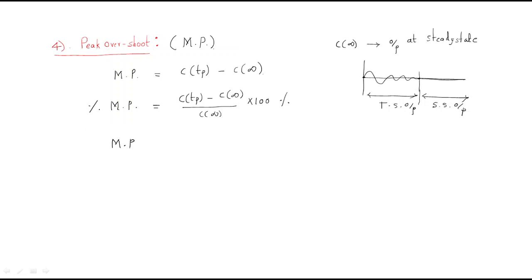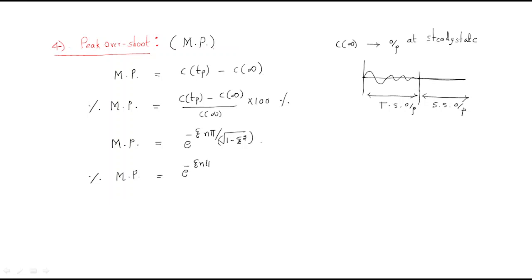Solving that expression gives us the maximum peak value directly as e to the power of (−ζπ / √(1 − ζ²)). The percentage maximum peak value is this same expression multiplied by 100: e^(−ζπ / √(1 − ζ²)) × 100.